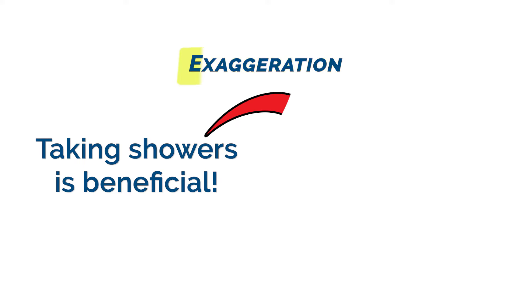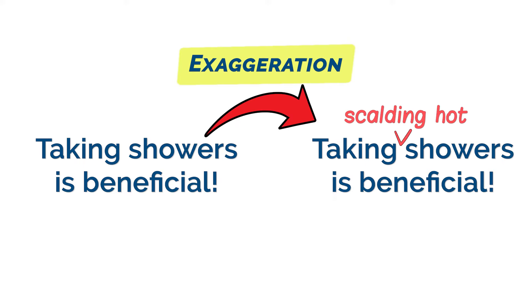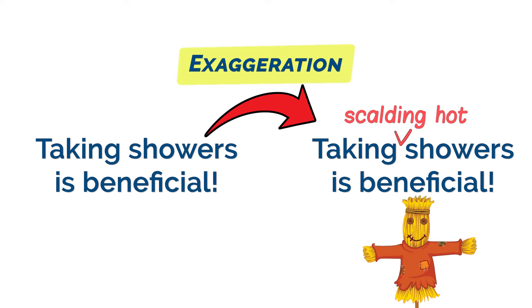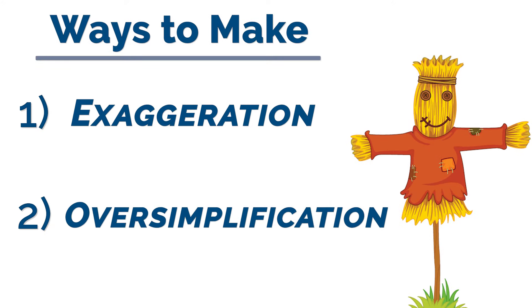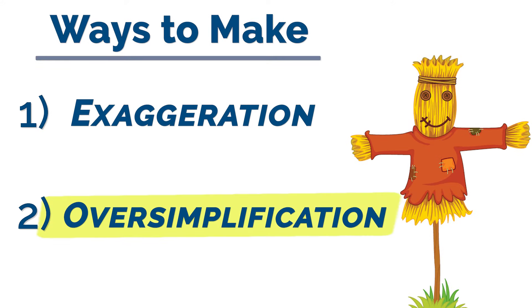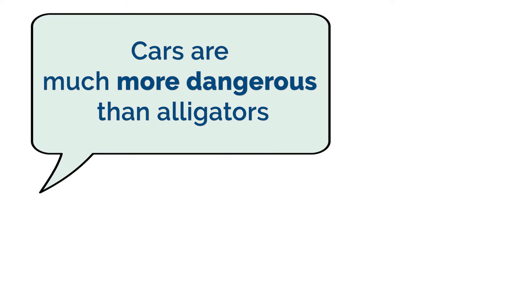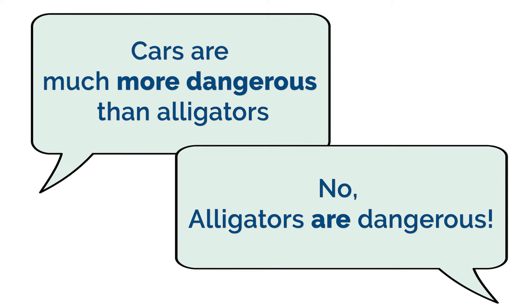The hot shower example used exaggeration to avoid the actual argument, but a strawman can also be constructed through oversimplification. Consider the argument: cars are much more dangerous than alligators. With the counter argument: how can you say alligators aren't dangerous? Didn't you hear about that boy that was recently killed by an alligator?